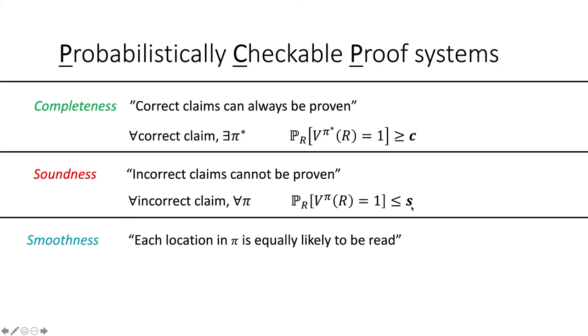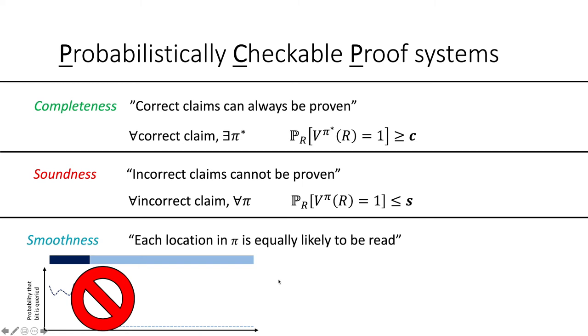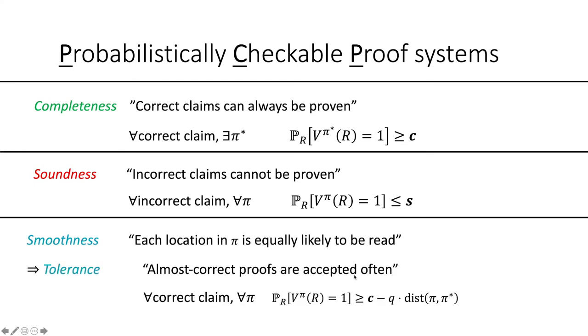Another property that we need, and this property is looked at less often, but it's still very useful here, is this smoothness property. Each location pi is equally likely to be read. So think of your proof pi. Could it be the case that the bits in the first part of the proof are read very often, whereas bits in the second part of the proof are read infrequently? Here I'm plotting the probability that a certain bit is queried. Well, smoothness says no, this cannot be the case. All bits are created equal, all bits are equally likely to be queried. And the reason this is useful for us here is because smoothness implies tolerance. If a proof is almost correct for a correct claim, it'll still be accepted with very high probability.